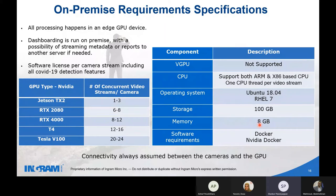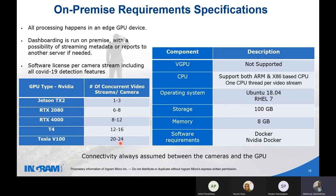Regarding GPU models: all models can work, and for specific use cases, specific models are recommended. For example, a Tesla V100 supports up to 24 cameras; if the customer has more cameras, a different model may be more suitable. The GPU model is determined together with the customer depending on the number of cameras and desired use cases.